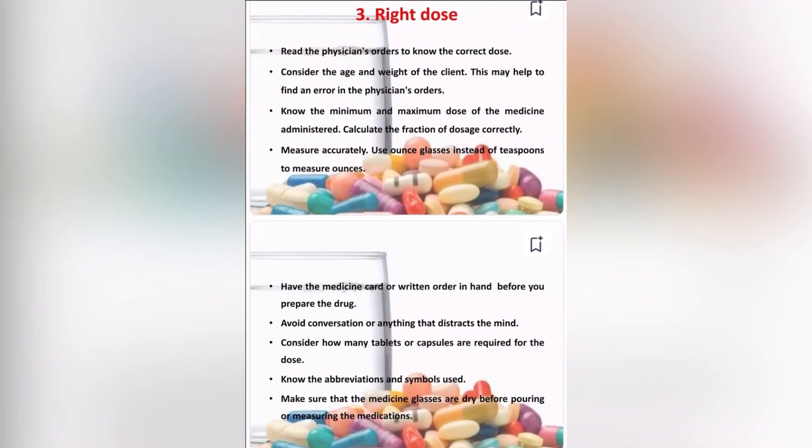Right dose: Read the physician's orders to verify the correct dose. Consider the age and weight of the client, as this may help identify an error in the physician's order. Know the minimum and maximum dose of medicines administered. Calculate fractions of dosage correctly and measure accurately. Use an ounce glass instead of teaspoons to measure ounces. Have the medication card or written order in hand before preparing the drug. Avoid conversation or anything that distracts the mind. Consider how many tablets or capsules are required for the dose.